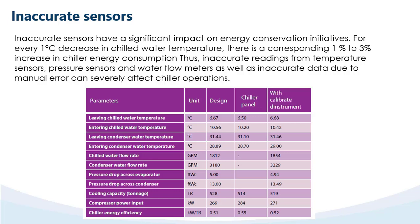Cooling capacity: design 528 TR, chiller panel 514 TR, calibrated instrument 519 TR. Compressor power input: design 269 kW, chiller panel 284 kW, calibrated instrument 271 kW. Chiller energy efficiency: design 0.51 kW/TR, chiller panel 0.55 kW/TR, calibrated instrument 0.52 kW/TR.